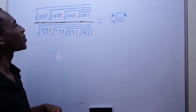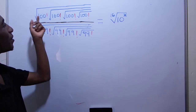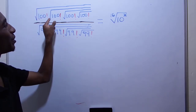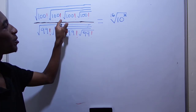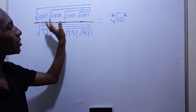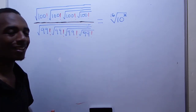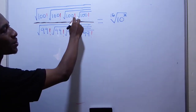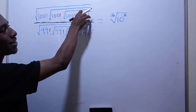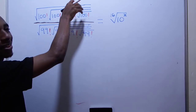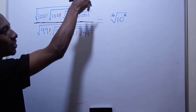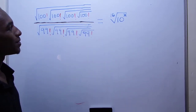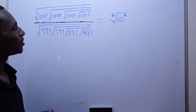So another interesting problem here. We have the square root of 100 factorial times the square root of 100 factorial, just like that. Every square root is inside of another square root that is outside it. So let's see what to do with this.